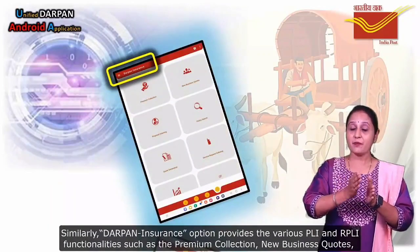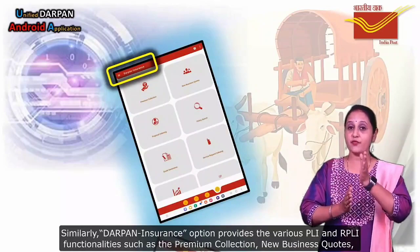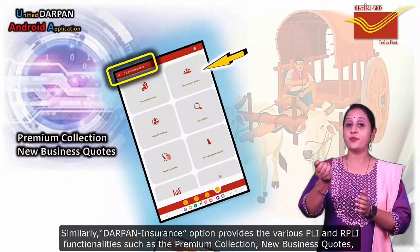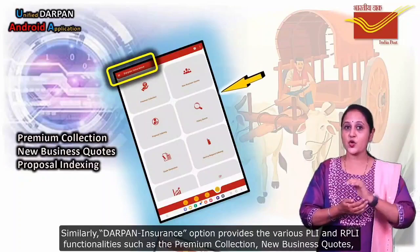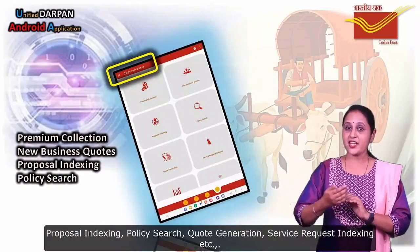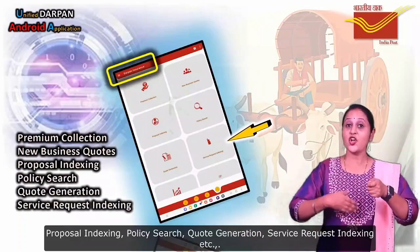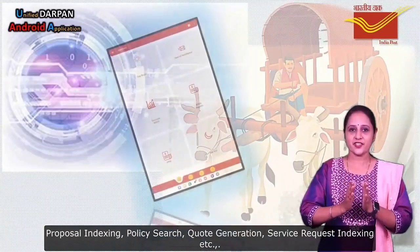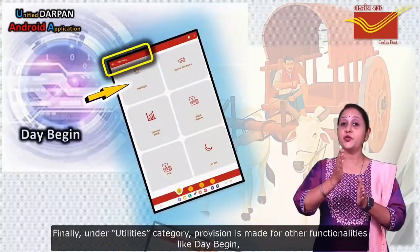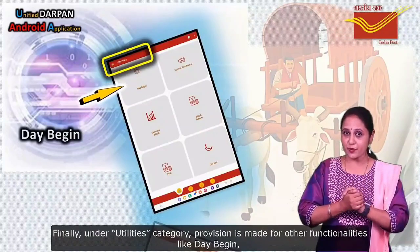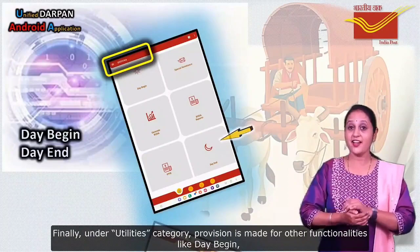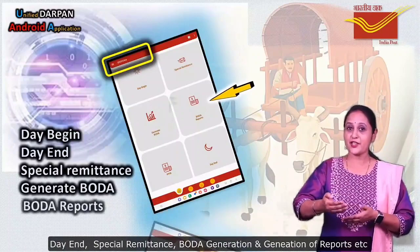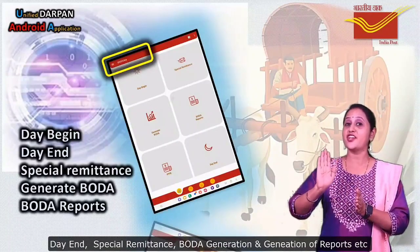Similarly, the DevPoint Insurance option provides various PLI and RPLI functionalities such as Premium Collection, New Business Codes, Proposal Indexing, Policy Search, Code Generation, and Service Request Indexing. Under the Utilities category, provision is made for other functionalities like Day Begin, Day End, Special Remittance, Border Generation, and Generation of Reports.